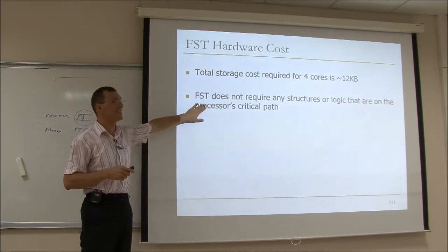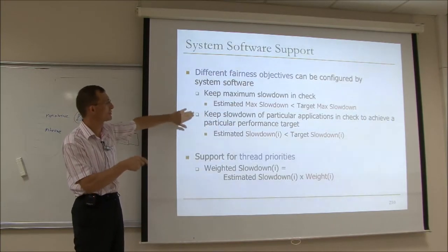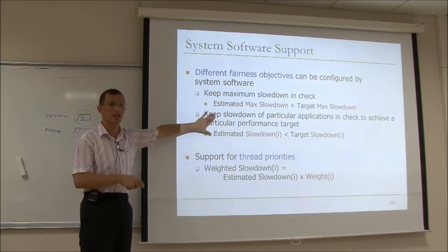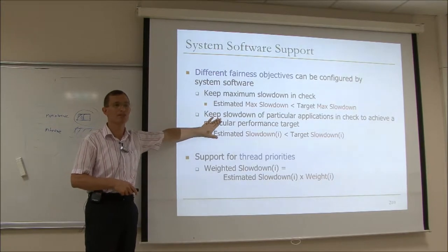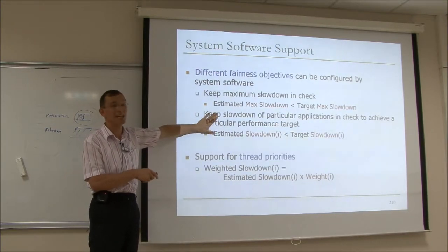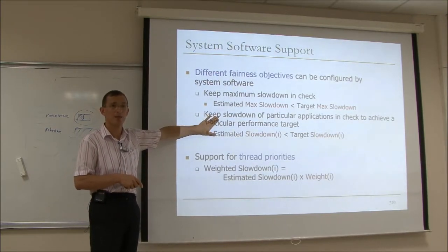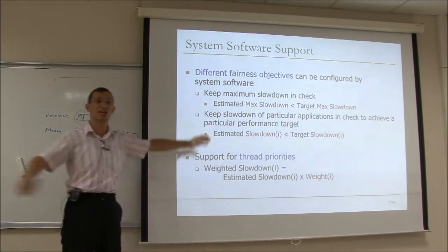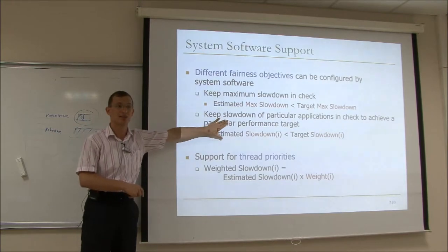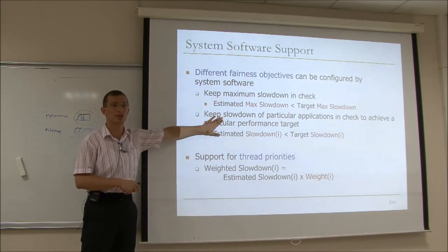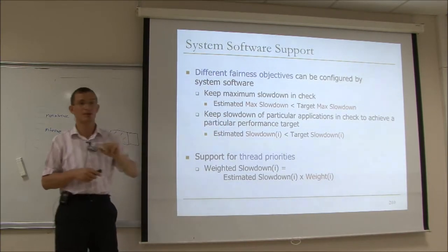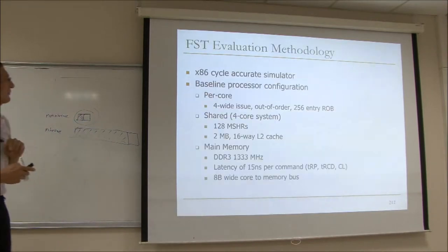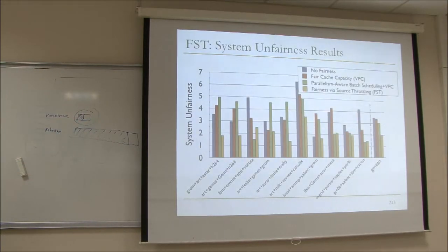The accuracy is good for some goals, but not good for the goal of predictable performance. We found that fairness via source throttling works in some cases but doesn't work as well for all cases, because the average error is relatively high — similar to the average error we get with STFM.